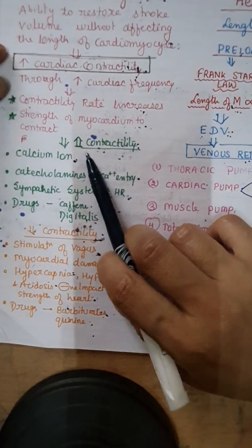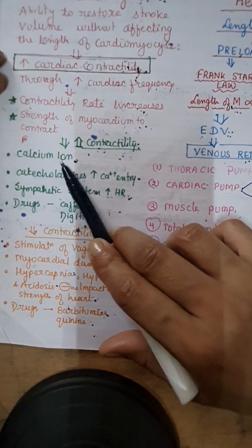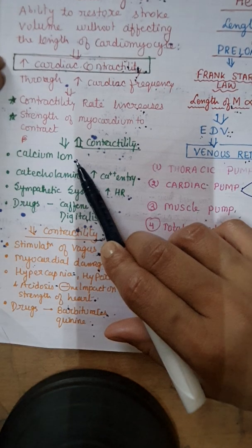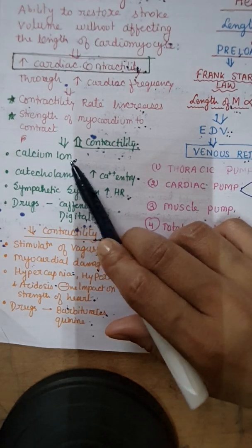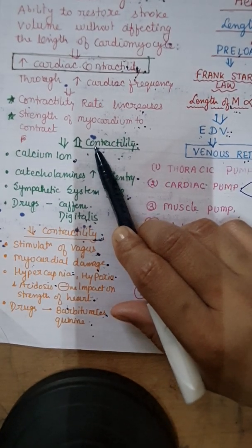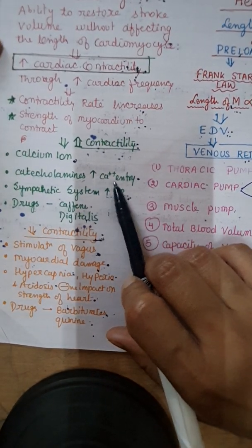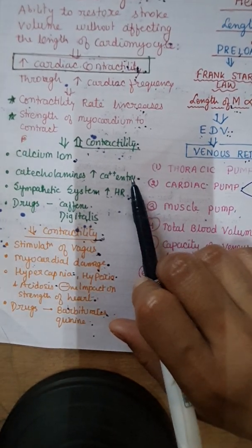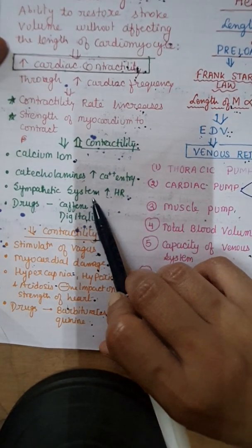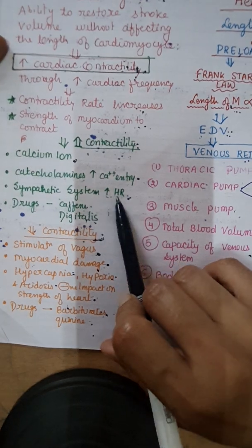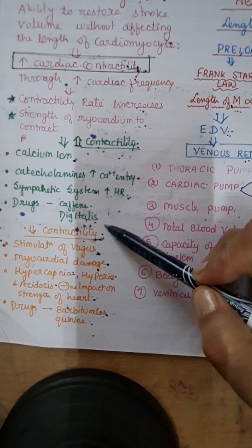Factors that increase cardiac contractility include calcium ions — if there are high levels of calcium ions within the cardiac muscle, there is a good mechanism of contraction, which increases cardiac contractility. Second are catecholamines, which increase calcium entry and ultimately enhance cardiac contractility. The sympathetic system also has a role in increasing heart rate and cardiac contractility. Certain drugs like caffeine and digitalis also increase cardiac contractility.